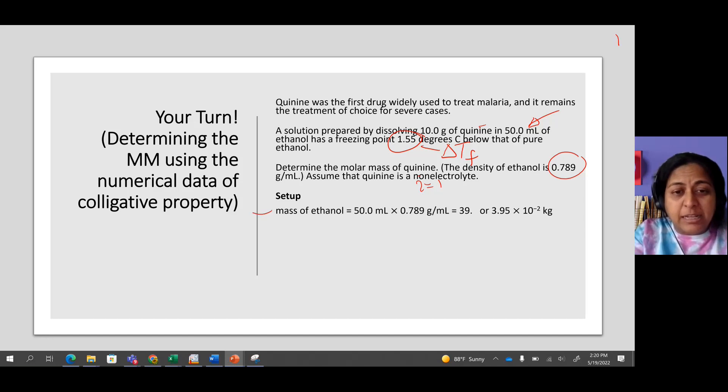We first calculate the mass of the solvent, which is ethanol. We multiply the volume by its density, and we get 39.5 grams, which in kilograms is 0.0395 kg.